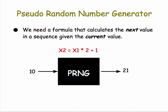Here's a formula that will give us that result. So for example, if x1 is 10, then 10 times 2 plus 1 gives us 21, which is x2. That's the kind of formula we need.